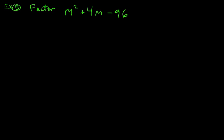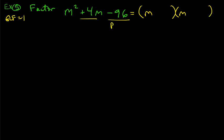Let's try another: factor m² + 4m − 96. GCF is 1. We're looking for two numbers whose product is −96 and whose sum is positive 4.